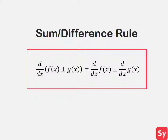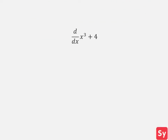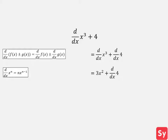Let's see some examples. For the first example, we want to compute the derivative of x cubed plus 4. First we will use the sum difference rule. This equals the derivative of x cubed plus the derivative of 4. We will solve the derivative of x cubed first. Using the power rule, this equals 3x squared plus the derivative of 4.